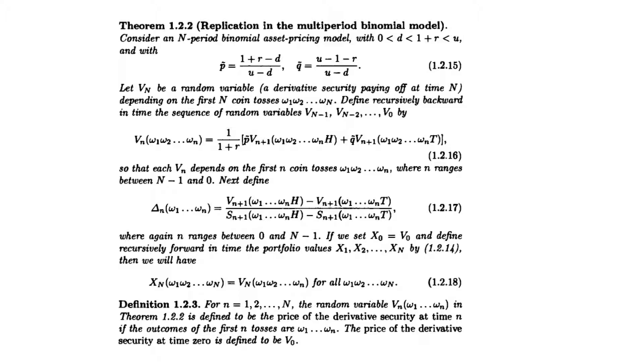There's theorem 1.22 and definition 1.23 in the book. Long story short, what they are trying to say is that we can do exactly what we did in the previous slide. Recursively, you can look at this thing as just a set of one-period binomial trees. Using that, we can essentially price the option today. That's all I want to talk about in this section. Thank you very much for watching. We'll be moving to the next video on to chapter 2. Thank you and see you later. Bye-bye.